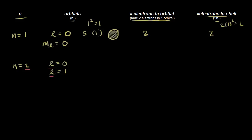We already talked about what l is equal to zero means — it refers to an s orbital, and there's one of them. So in the second energy level there's another s orbital, also shaped like a sphere. When n is equal to two, the electron is, on average, further away from the nucleus.